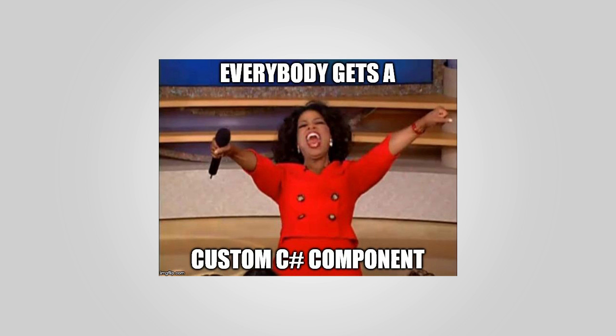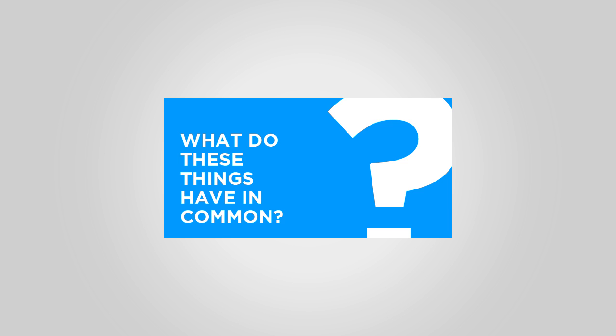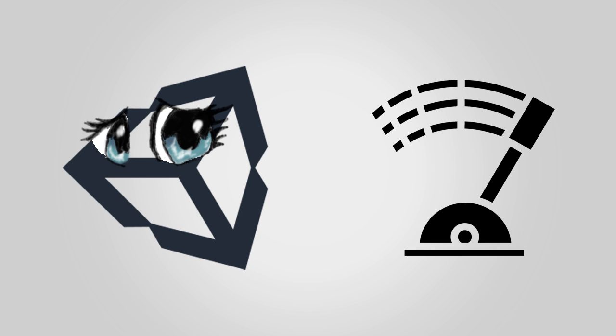It's easy to get bogged down in something like this and just start writing custom code and different scripts for every interactable we encounter, but we can actually avoid this by taking a step back, looking at what all of our switches have in common, and planning from there. So this video is going to be a little bit less about coding and less about diving into the Unity editor, and more about really looking at what these switches are and how we can most efficiently make them.